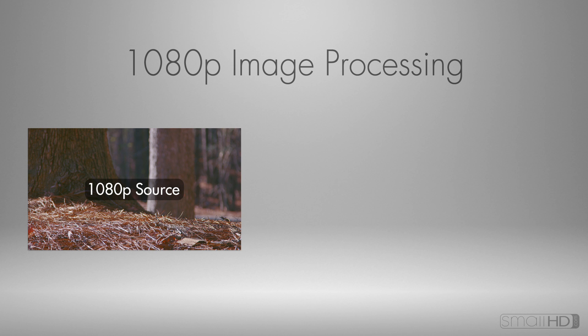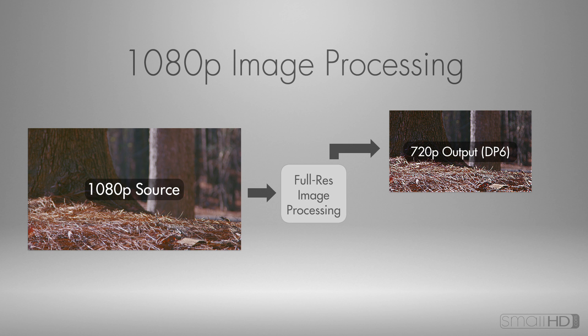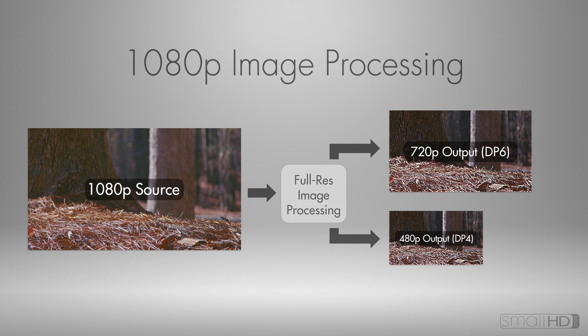Another factor that helps the DP6 and DP4 provide such an accurate focusing aid is the processing — it actually works on the full resolution image before outputting to the display. So if you're shooting in 1080p, Focus Assist Plus analyzes and works on that signal at its native resolution before outputting the result. This means the focus assist on the DP4, even though the monitor is 800 by 480, will provide an output that is totally accurate and true to the 1080p source image.